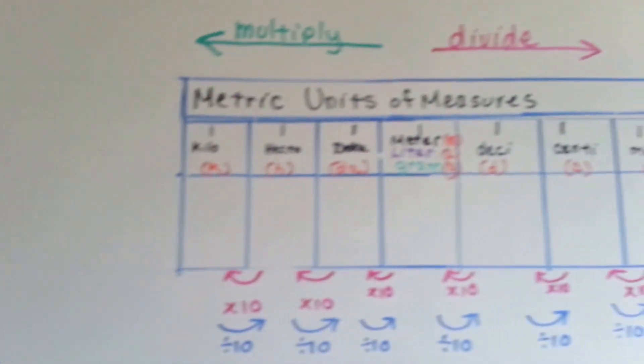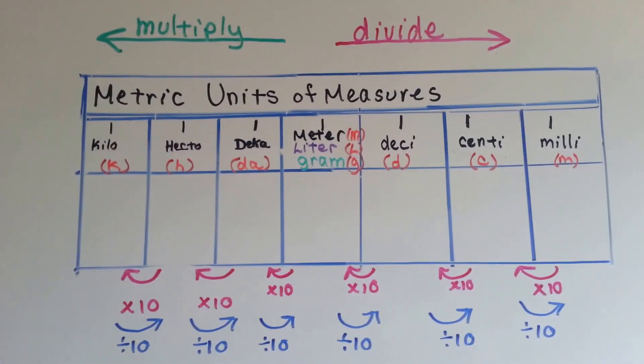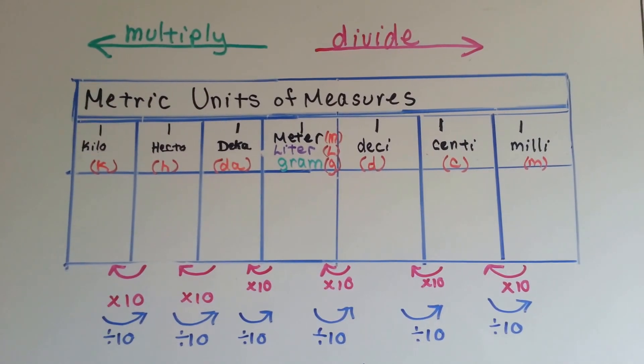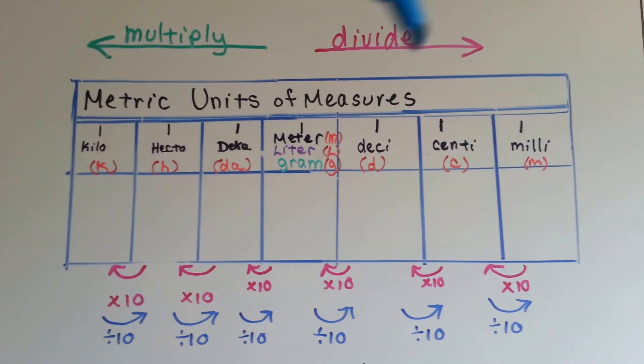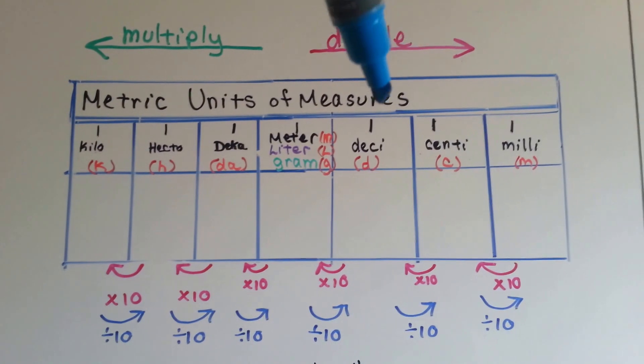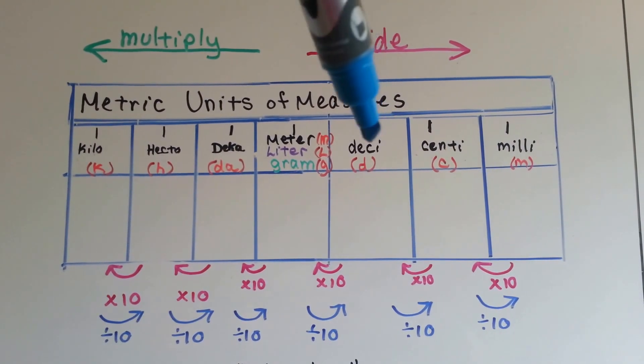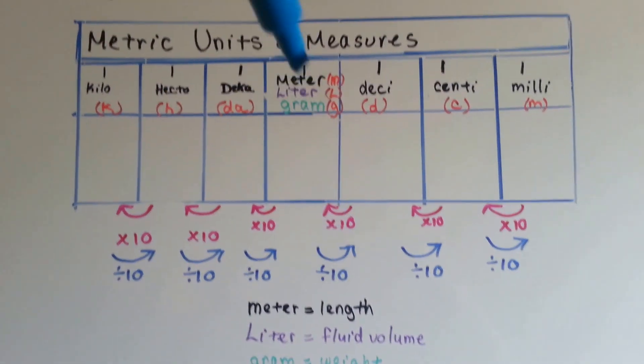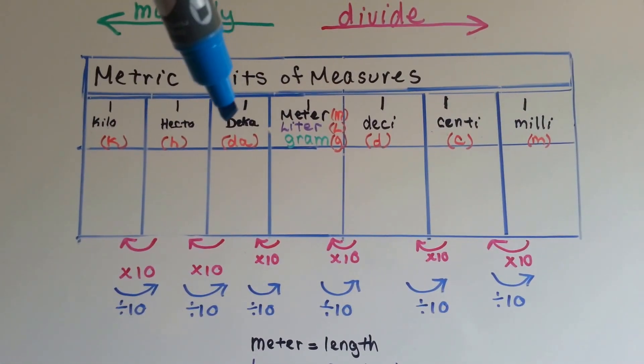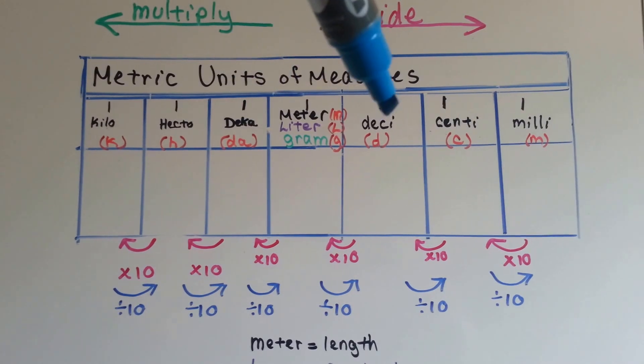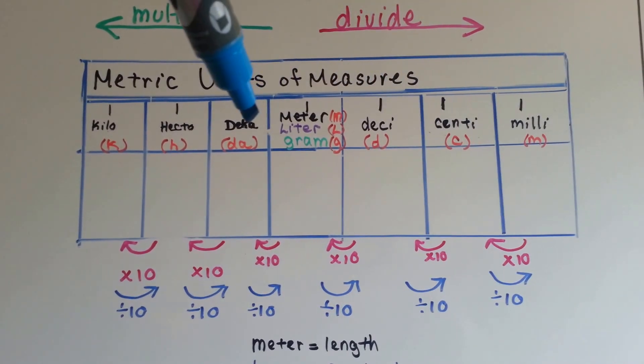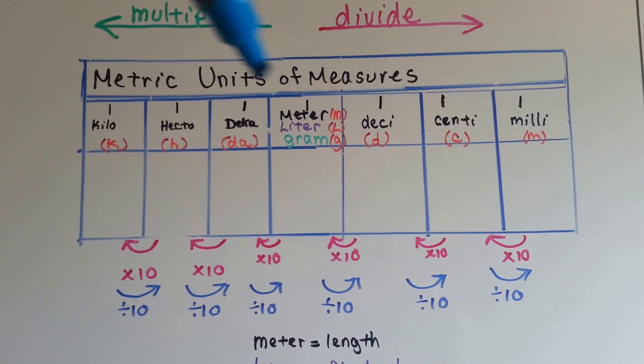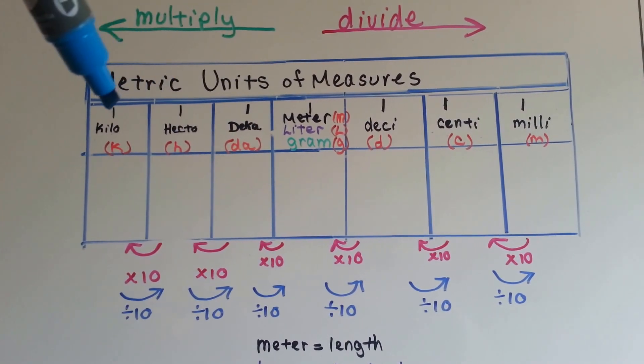If you look at the metric unit of measures chart, you can see that they all have the same prefixes. They have milli, centi, deci with a CI, then meter, liter, or gram, depending on if it's length, fluid volume, or weight. And then it moves to deka, D-E-K-A. That's the difference between this is a CI and it's a K-A. So even its abbreviation is a D-A instead of just a D. Hecto is an H, and kilo, K.